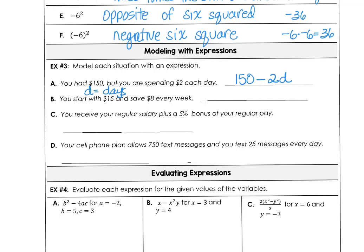In part B, you start with $15, and you save $8 every week. So we're going to use the letter W to represent the number of weeks that you've been saving. You started with $15, and every week you put $8 in for each week. So it's eight times the number of weeks and $15 to begin with.